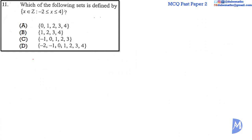Question 11. This set builder notation reads: the set of all X that are members of integers such that X is greater than or equal to negative 2 and less than or equal to 4. This defines the set of integers from negative 2 to positive 4 inclusive. The answer is D.